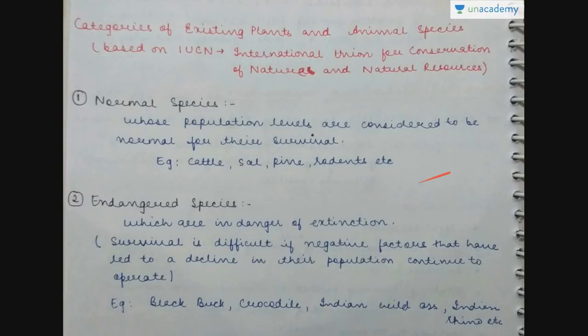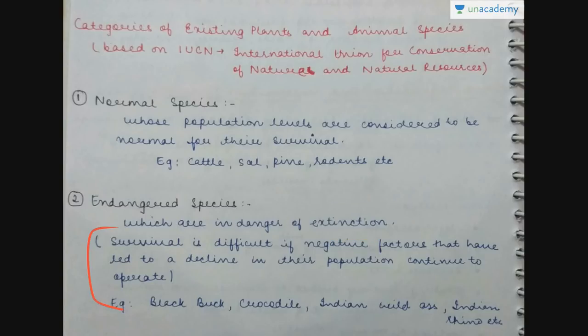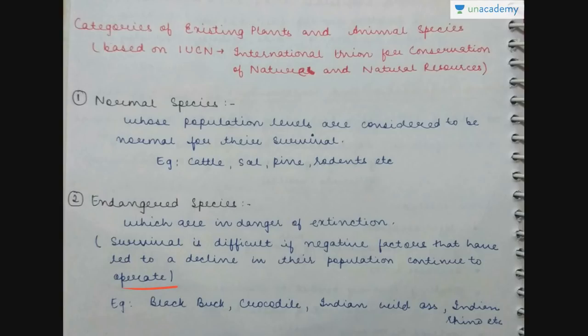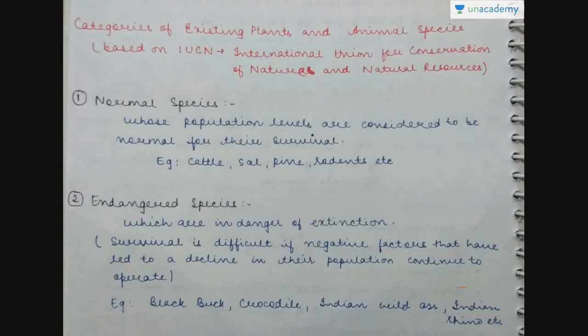The next category is endangered species — those in danger of extinction whose survival is difficult if the negative factors that have led to a decline in their population continue to operate. Examples include blackbuck, crocodile, Indian wild ass, and Indian rhino.